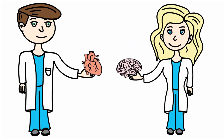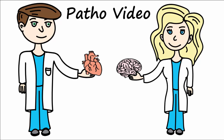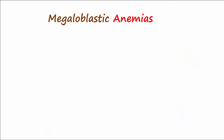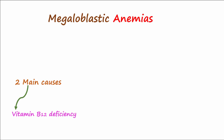Welcome to another patho video. This is the second of a two-video series on megaloblastic anemia. Today let's talk about folic acid deficiency anemia. The two main causes of megaloblastic anemia are vitamin B12 deficiency, which we discussed in part one, and folic acid deficiency, which we discuss in this video.